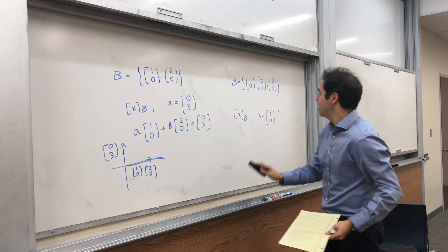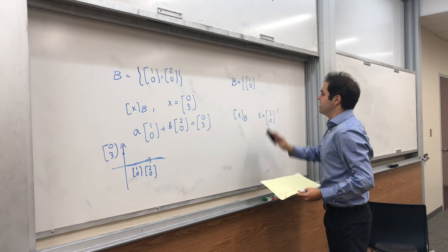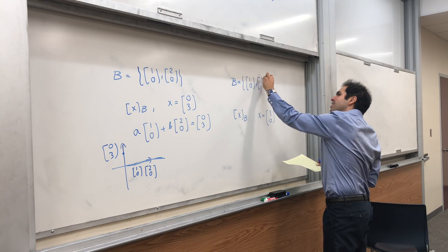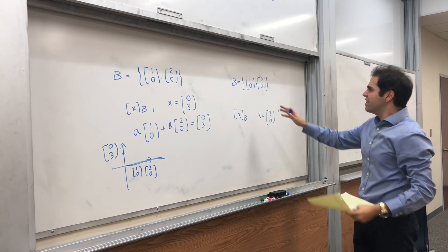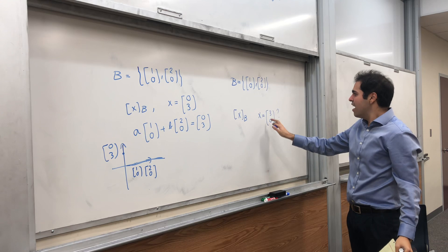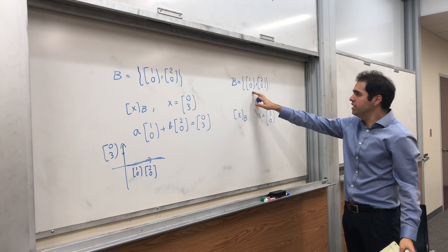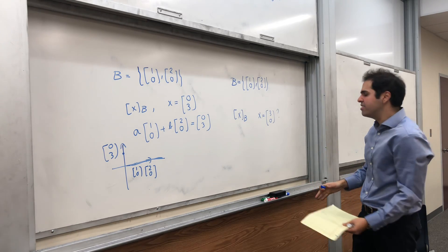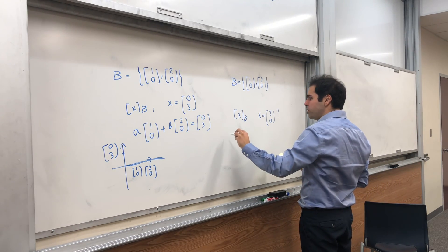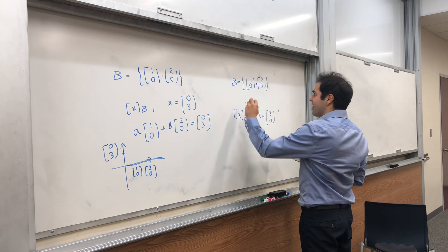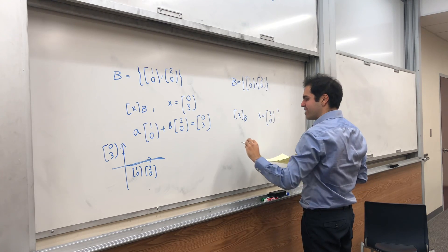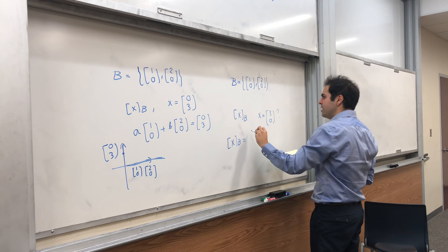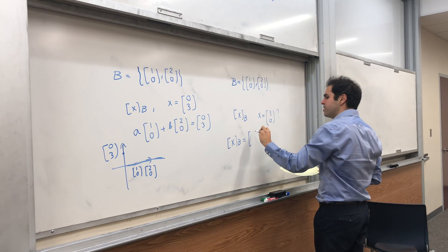Well, the question is, well, maybe let me modify this a little bit. So let's take this basis. Again, not a basis, but let's take this thing. The question is, well, how many steps would you need to take in (1,0) and (2,0) to get (3,0)? Well, on the one hand, would you take three steps in this direction to get this? So the question is, on the one hand, is xB (3,0)?